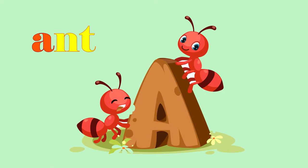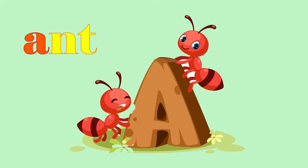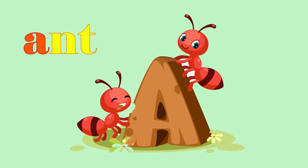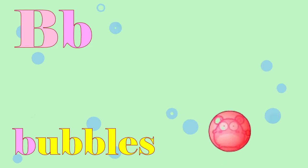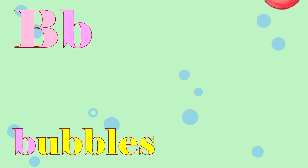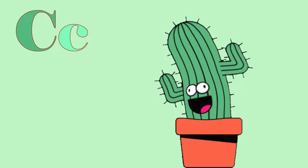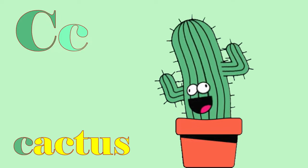A is for ant, eh. B is for bubbles, buh. C is for cactus, kuh.